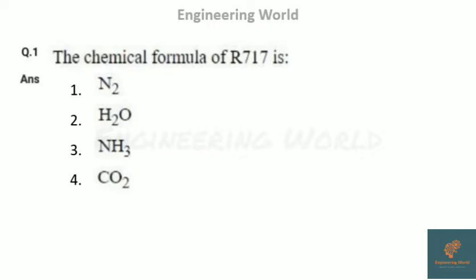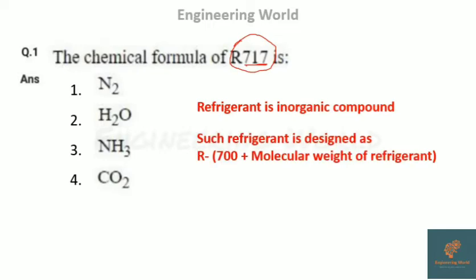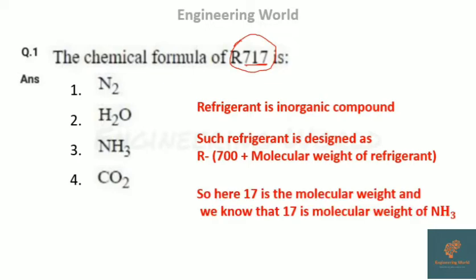R717 has three digits — 717. It is an inorganic compound. Inorganic refrigerants are designated as R700 plus the molecular weight of the refrigerant. Here, 17 is the molecular weight, and we know that NH3 has a molecular weight of 17 — nitrogen is 14 and three hydrogens add 3. Hence, the answer is NH3.